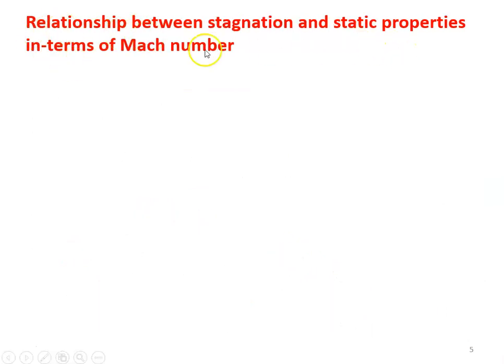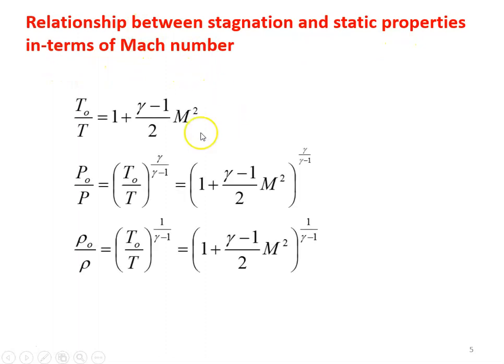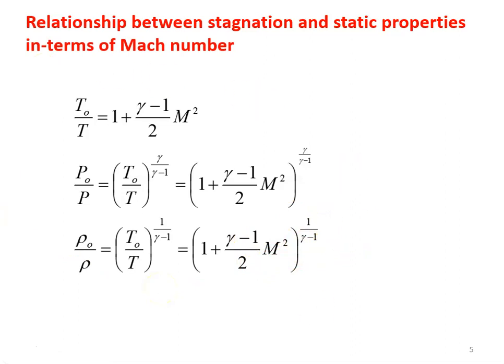Now the relationship between stagnation and static properties in terms of Mach number — these were already discussed in the introductory lecture. The stagnation temperature ratio: T0 by T equals 1 plus (Gamma minus 1) by 2 times M squared. The pressure ratio P0 by P equals (1 plus (Gamma minus 1) by 2 M squared) to the power Gamma by (Gamma minus 1), and the density ratio Rho0 by Rho equals T0 by T to the power 1 by (Gamma minus 1), which equals (1 plus (Gamma minus 1) by 2 M squared) to the power 1 by (Gamma minus 1).